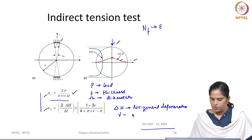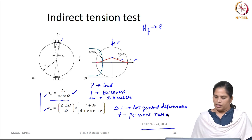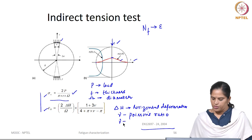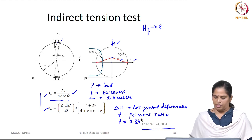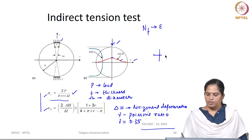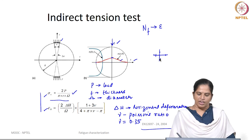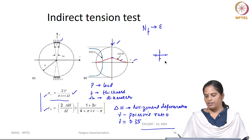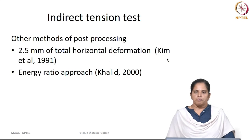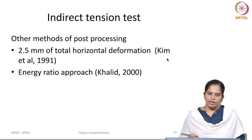The nu value in the strain equation is the Poisson's ratio. If you have measured only one deformation, you can assume Poisson's ratio as per EN standard recommendation to be 0.35. If you have measured both horizontal and vertical deformations using two strain gauges, you can calculate Poisson's ratio as already seen in the resilient modulus calculations. There are many other methods of post-processing used in calculating the fatigue damage.